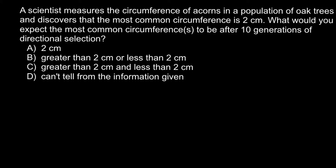What would you expect the most common circumference to be after 10 generations of directional selection? Here are four answers to choose from: Answer A, two centimeters; Answer B, greater than two centimeters or less than two centimeters; Answer C, greater than two centimeters and less than two centimeters; and D, can't tell from the information given. And I have a hint for you — this is not answer D.